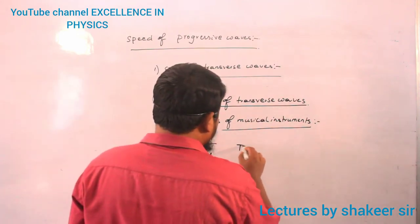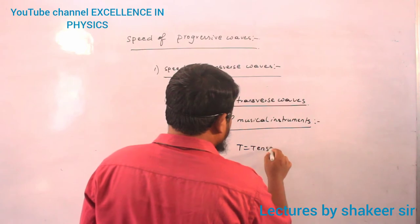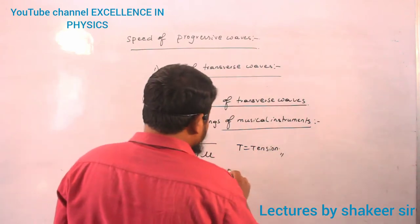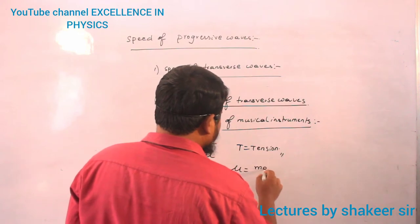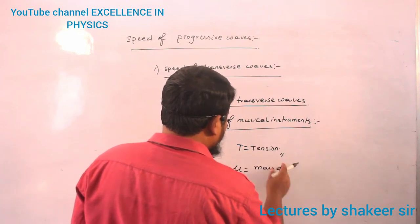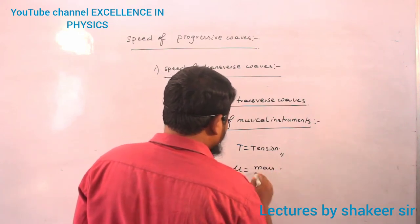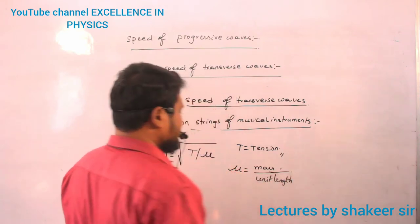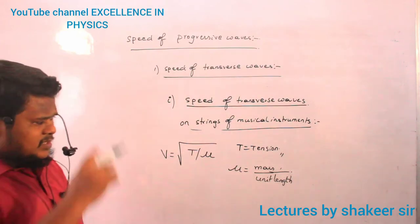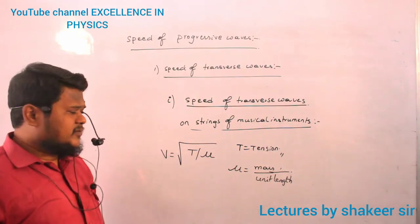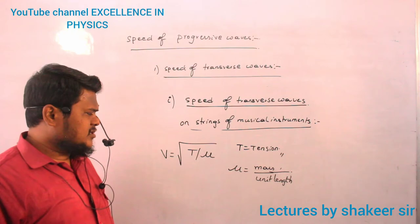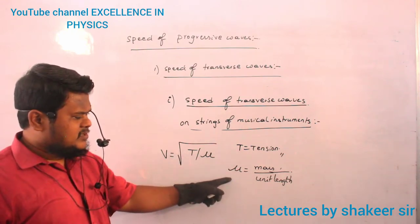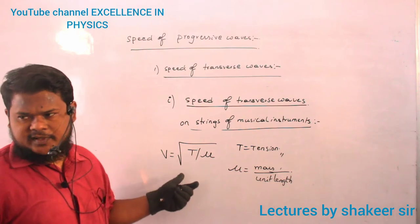T is the tension developed in the string. μ is the mass per unit length of the wire. If I increase the tension in the wire, speed increases. If mass per unit length increases, then the velocity of the transverse wave decreases.